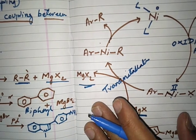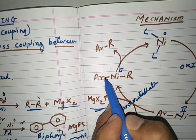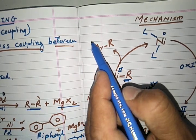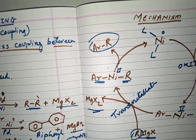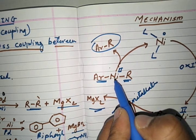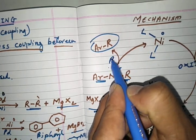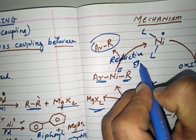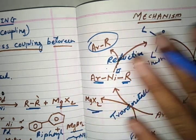The third step is reductive elimination. After transmetallation, the intermediate has nickel in the +2 oxidation state with two organic groups attached. Nickel then combines these two groups together, forming the carbon-carbon bond in the product. Nickel is eliminated and its oxidation state changes from +2 back to 0 — that is a reduction. Since elimination of nickel occurs along with reduction, this step is called reductive elimination.